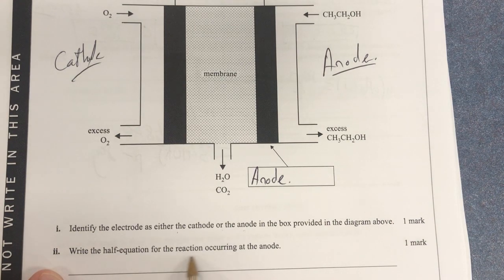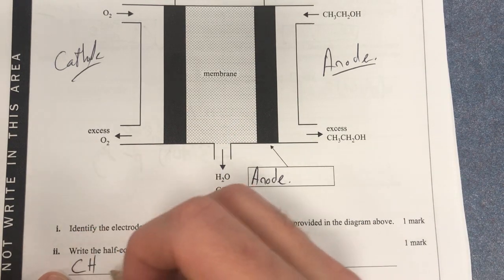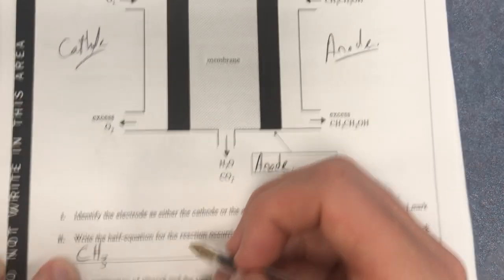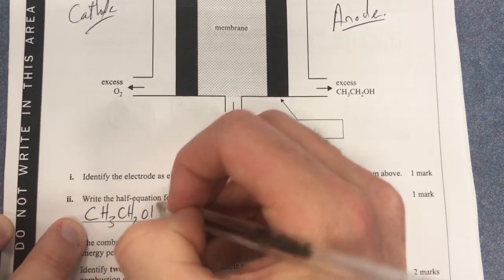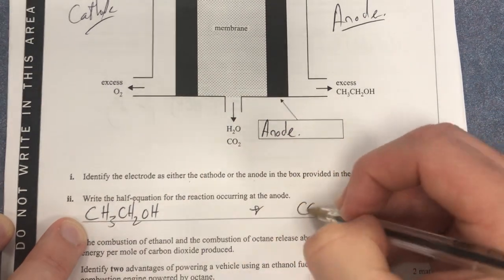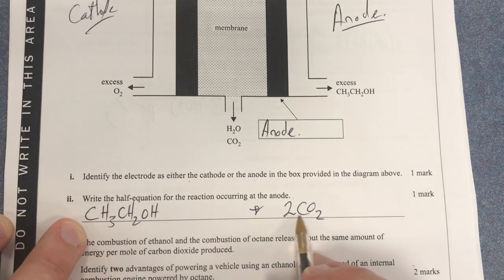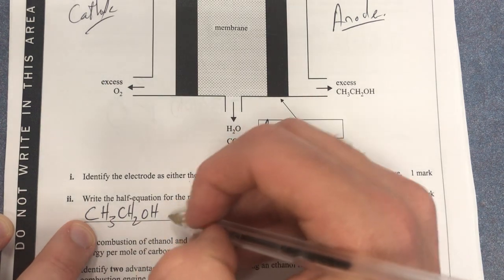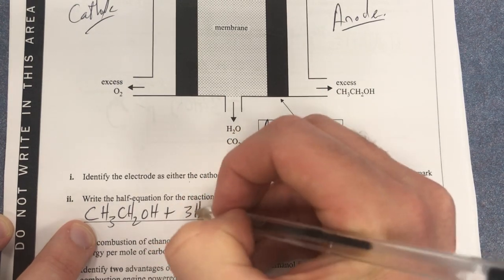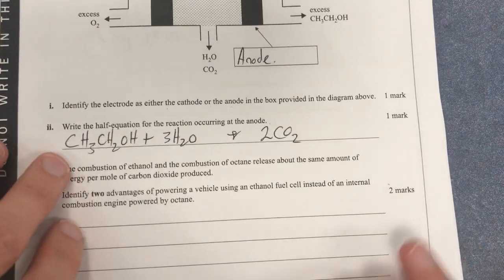Write the half equation for the reaction occurring at the anode. In this fuel cell, it's an organic fuel cell, so our organic fuel is going to be converted into CO2. We need to balance it: two carbons on each side, so two CO2. I've got four oxygens on the right and one on the left, so plus three H2O. This is an acidic fuel cell, so I'll balance the hydrogens with H positive.